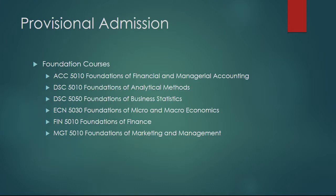If your admissions letter indicates you were provisionally admitted, your letter also indicates what foundation courses you're required to take. This is normally the case for students with non-business undergraduate degrees. You may have one to six courses listed as provisions. There's also an option to meet these provisions through self-study and test. We'll provide more information on an individual basis if you want to consider this — just call the MBA office at 866-622-8627.